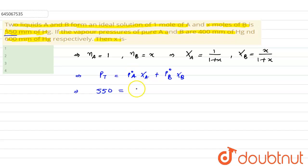It will be equal to p naught A, given as 400, mol fraction 1 upon 1 plus x, plus p naught B given as 600 into mol fraction x upon 1 plus x.